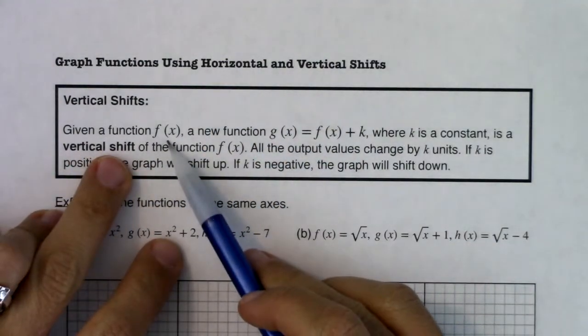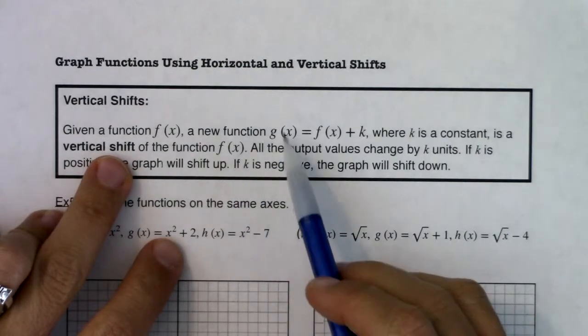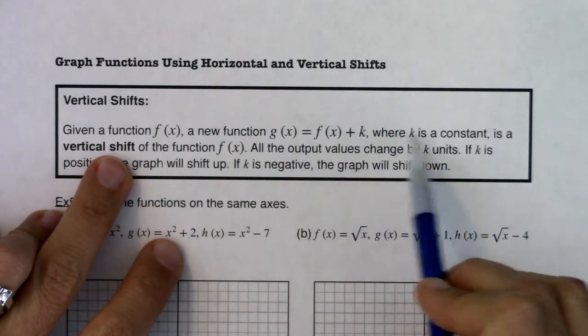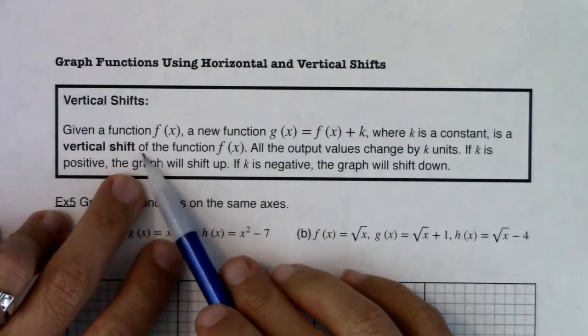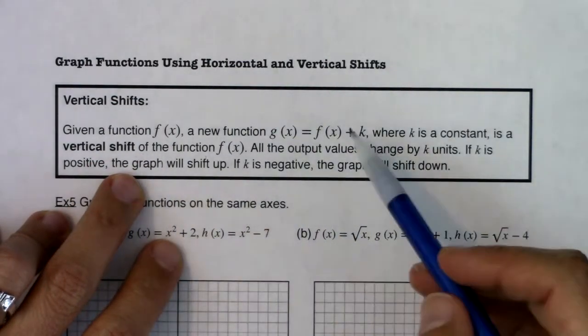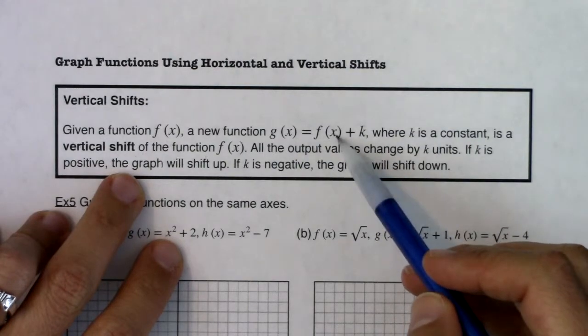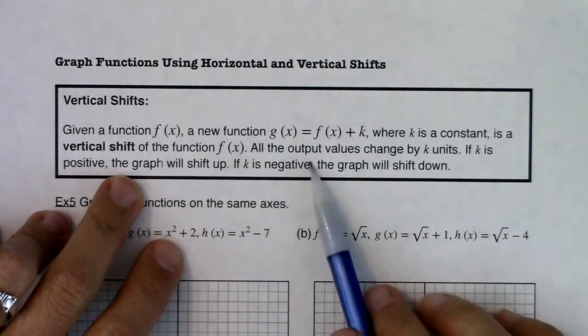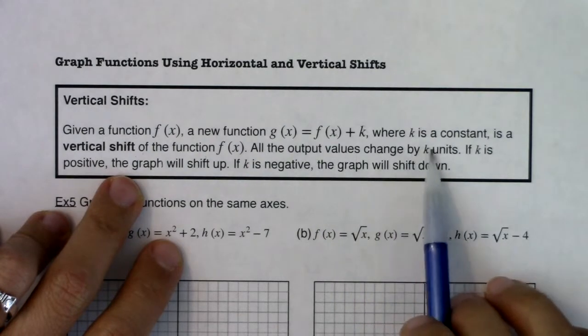So given a function f of x, a new function g of x, which is equal to f of x plus k, where k is a constant, is a vertical shift of the function f of x. So when you're adding a constant outside the function, outside the grouping symbols, you're going to shift vertically. All of the output values change by k units.